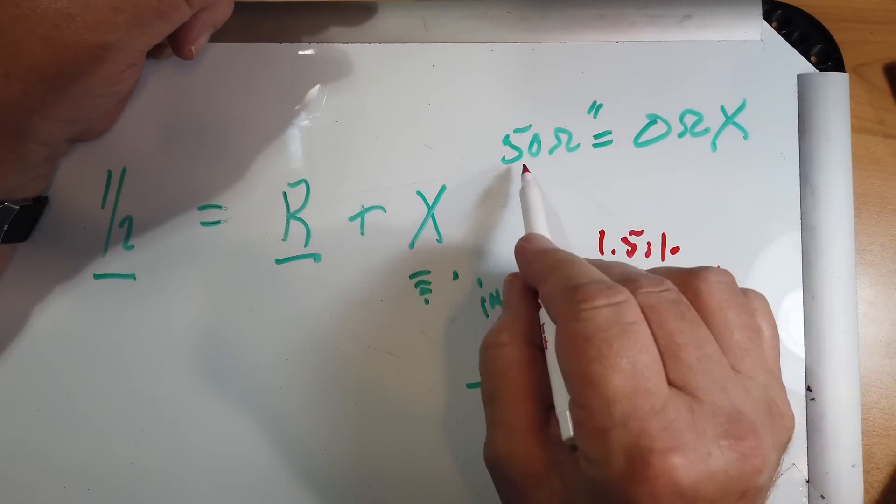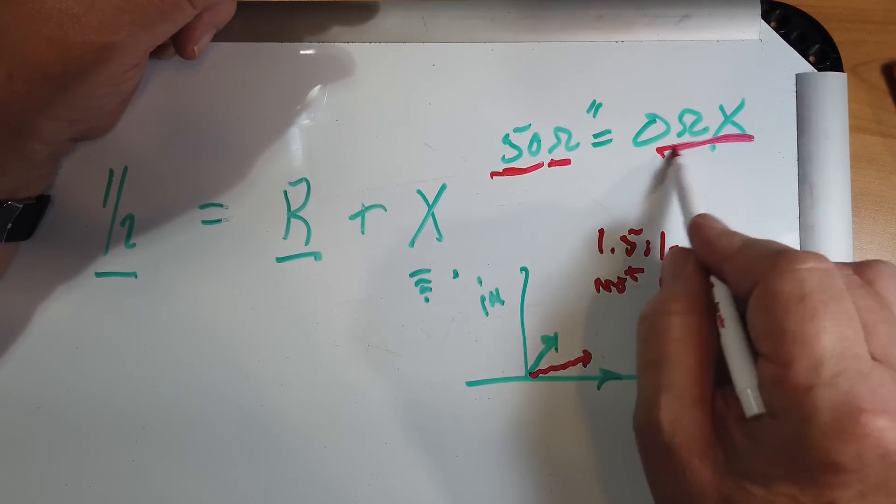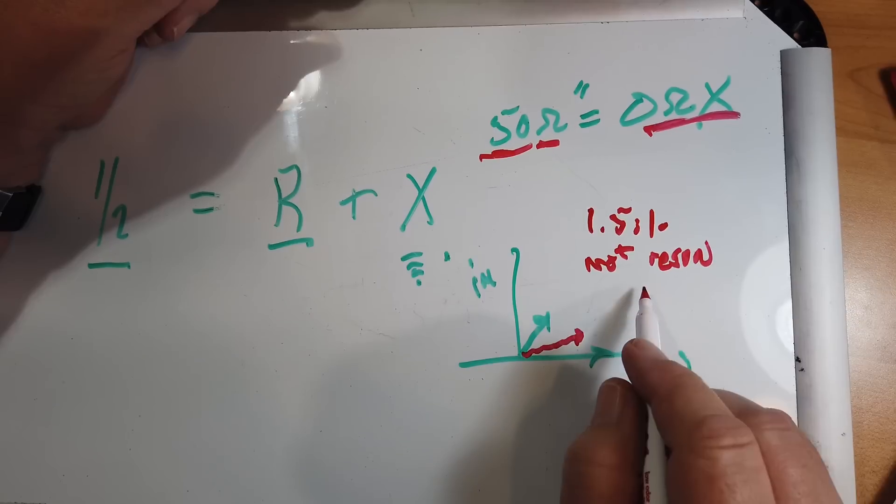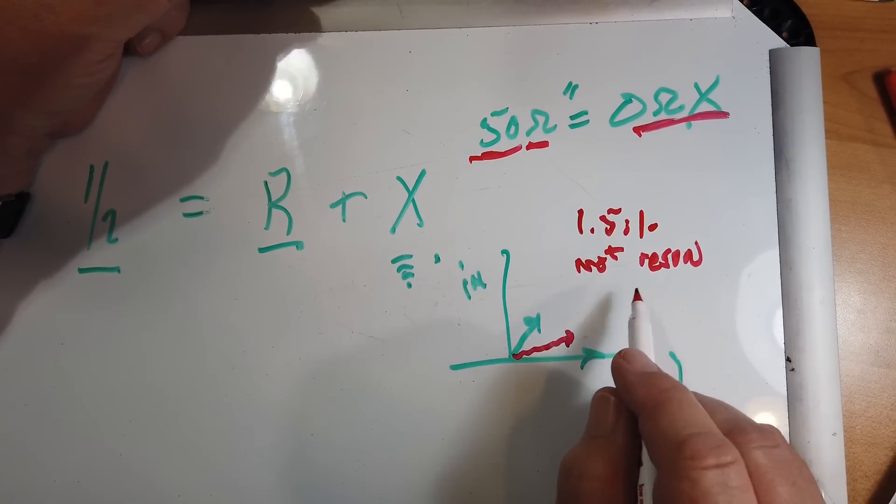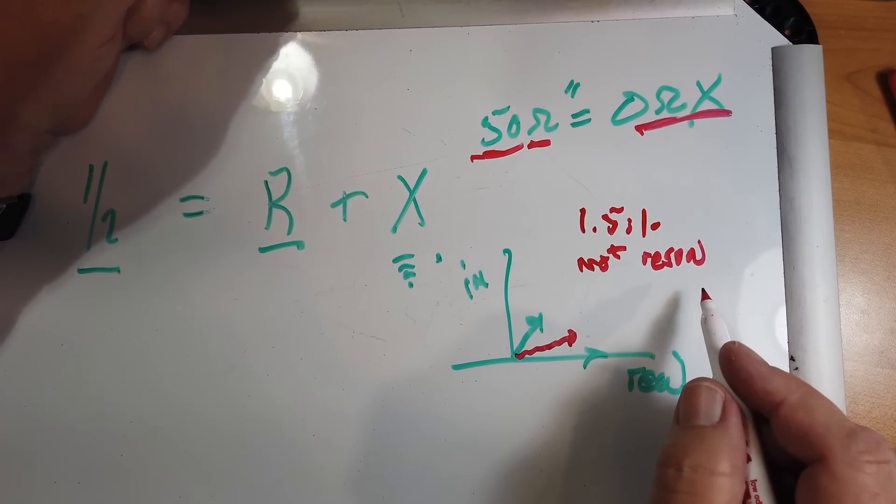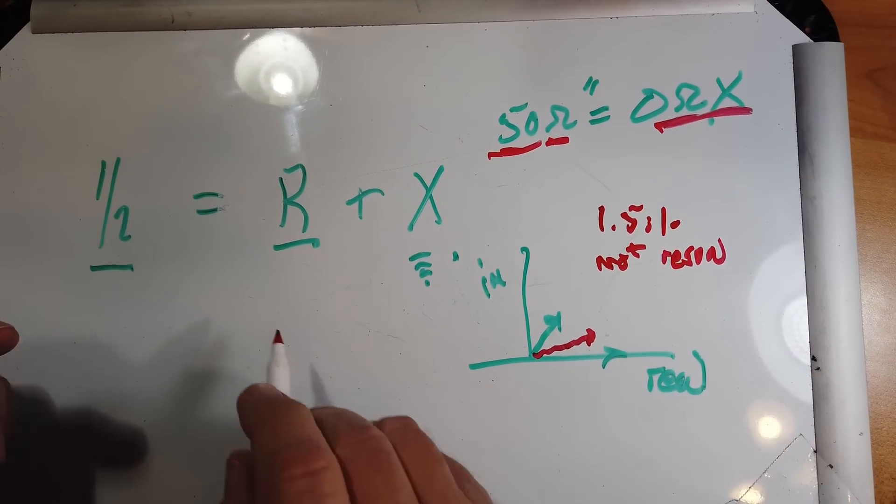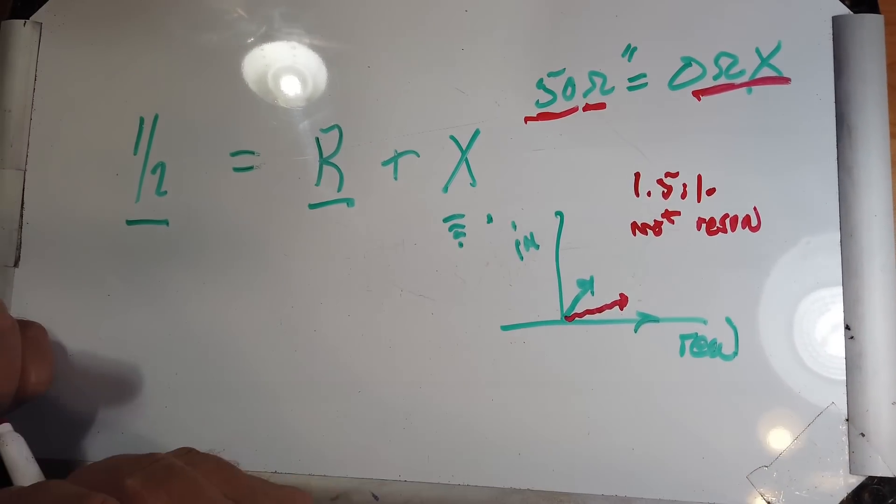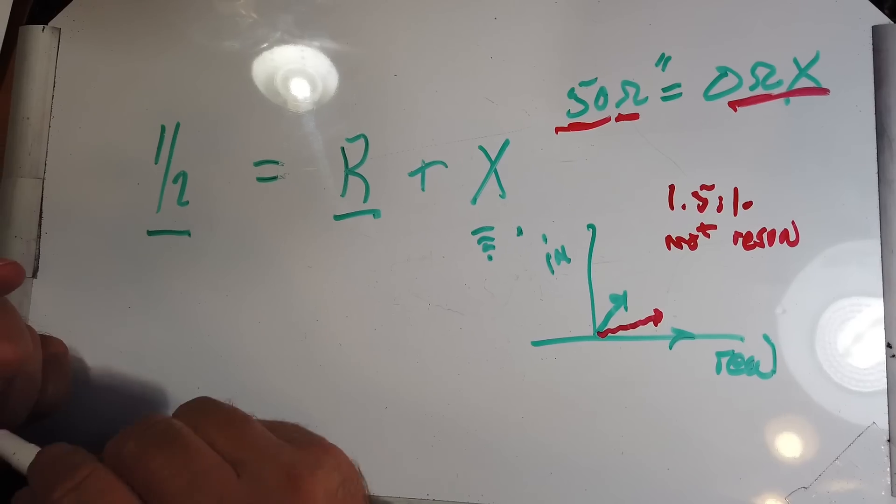This will not be the reactive or the resonant frequency. The resonant frequency, when you tune it to 50 ohms with zero impedance, is going to be slightly different. And we'll have a slightly higher SWR.